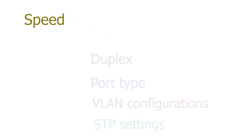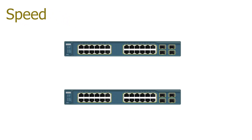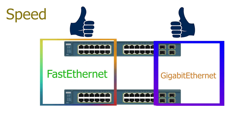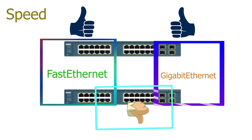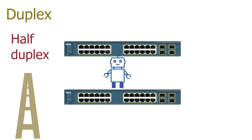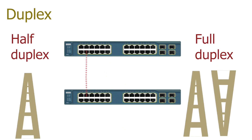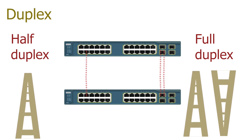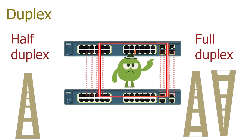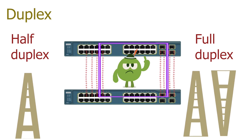All ports in an EtherChannel must have the same port speed. For example, we can create an EtherChannel of Fast Ethernet or Gigabit Ethernet ports, but we cannot create an EtherChannel having both types. A switch port can work in half-duplex mode — where it can either send or receive data at a given time — or full-duplex mode, where it can perform both actions simultaneously. In an EtherChannel, all ports must operate in the same mode; we cannot combine a half-duplex port with a full-duplex port.